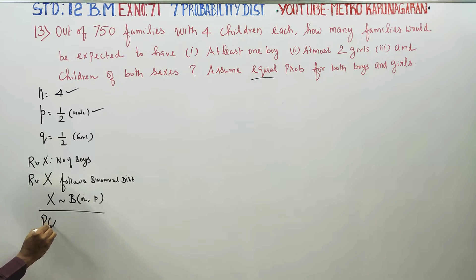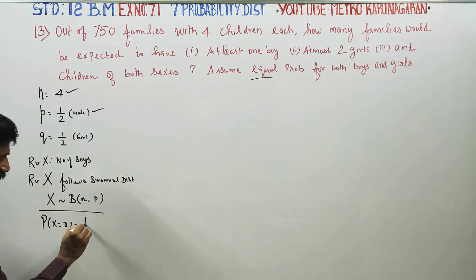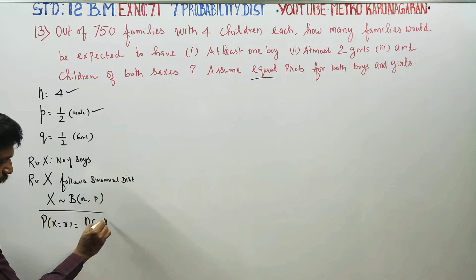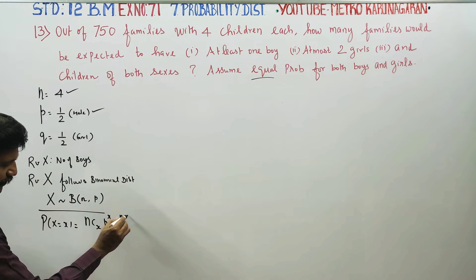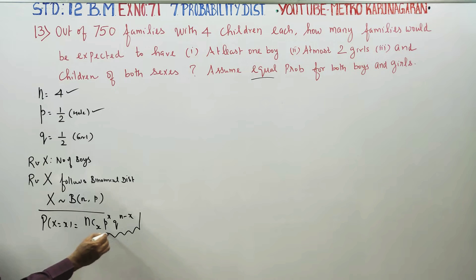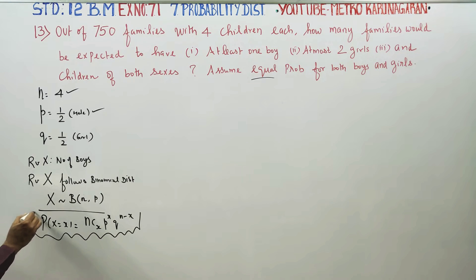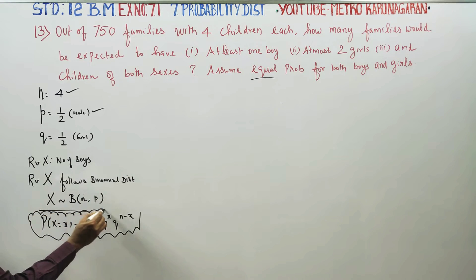The probability of X using the binomial distribution formula is: P(X = x) = nCx · p^x · q^(n−x). This is a very important formula for the whole sum.